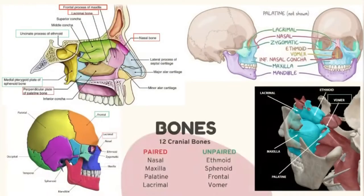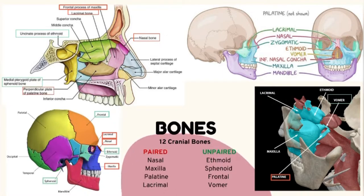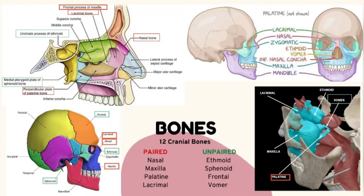Moving to the skeletal structure, there are a total of 12 cranial bones including paired and unpaired bones. The paired bones are nasal, maxilla, palatine and lacrimal. The unpaired bones are ethmoid, sphenoid, frontal and vomer. In the diagram, those in red boxes are the paired bones while the white boxes are the unpaired bones.